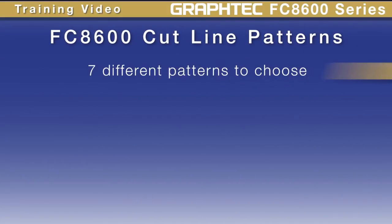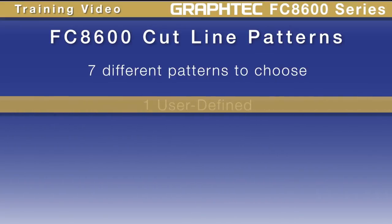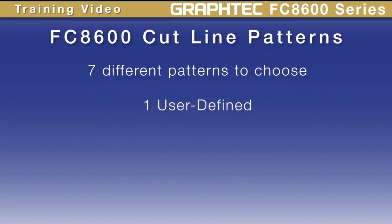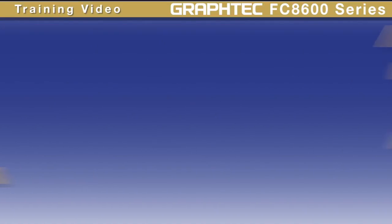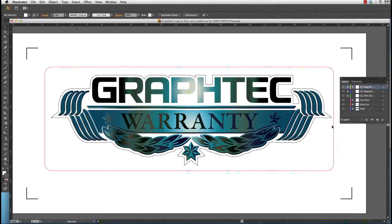The cut line patterns of the FC 8600 has seven different patterns to choose from including a user-defined pattern. In this lesson we'll set up the user-defined pattern because it is one that our technicians have tested thoroughly and found to work the best with most materials including laminated materials. Keep in mind that you may also find that using one of the seven predefined line patterns works best for your application, but try it this way first.